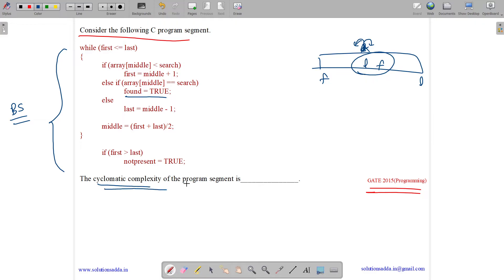The question asks, what is the cyclomatic complexity of the above segment? So what is cyclomatic complexity? It has a formula. It states that it is number of predicates with out degree equals to two plus one. So this is the formula.